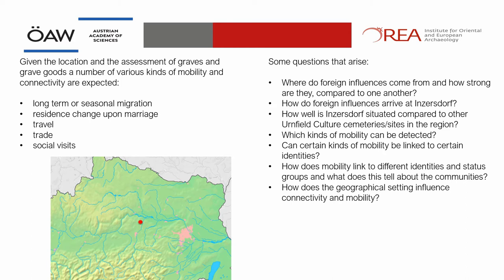When you consider that, some questions arise: where do foreign influences come from? How strong are they compared to one another? How well is Inzersdorf situated compared to other cemeteries? Which kinds of mobility can be detected? How can they be linked to certain identities? What does this tell us about the communities? And how does the geographical setting influence connectivity and mobility there?